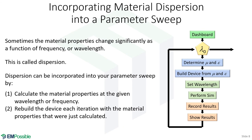Another type of parameter sweep is sweeping wavelength or frequency while incorporating dispersion. Before, we did not have build-device inside the loop. However, dispersion means your material properties are changing as a function of wavelength. When that happens, we do actually want to bring the build steps inside the loop. So for each wavelength, we determine what our permeability and permittivity are — using Lorentz models, Drude models, or other approaches. Given those values, we build our device again — those three arrays for permittivity, permeability, and thicknesses — and then set the wavelength, perform the simulation, record and show results.